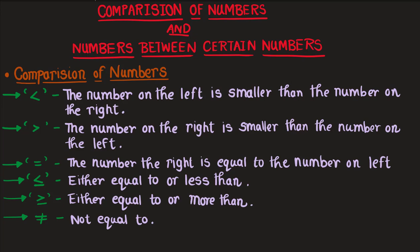The first sign indicates that the number on the left is smaller than the number on the right. For example, three is less than seven. The vertex or point indicates the smaller side, and the open side — like an open mouth — faces the greater number, seven. Whenever the open mouth faces a number, it means that number is greater.